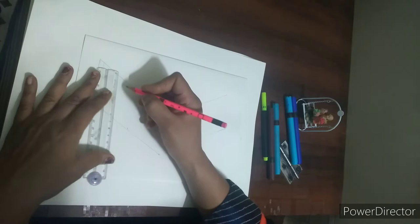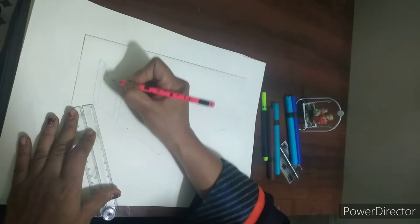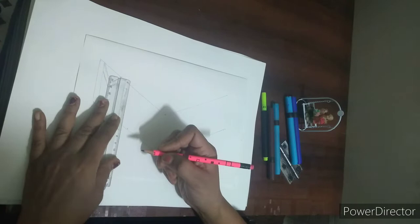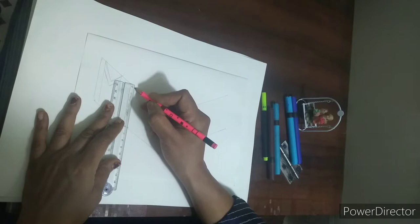And now we will draw the lines from here. You can use scale to draw straight lines into shape. Now I will draw, and now this is our F.